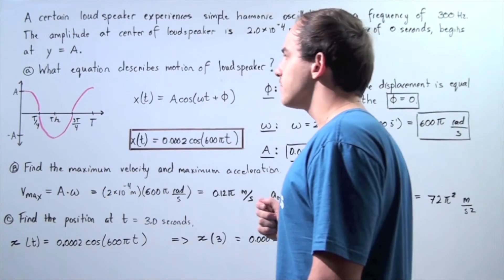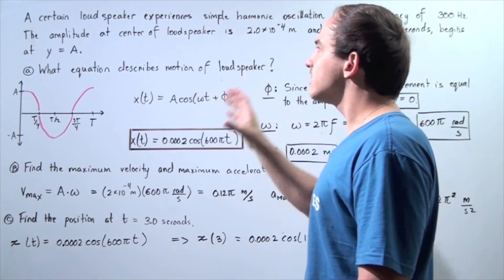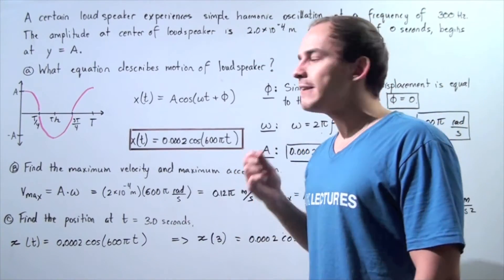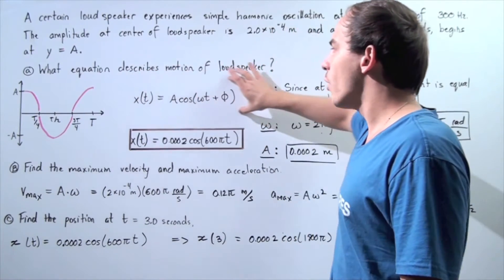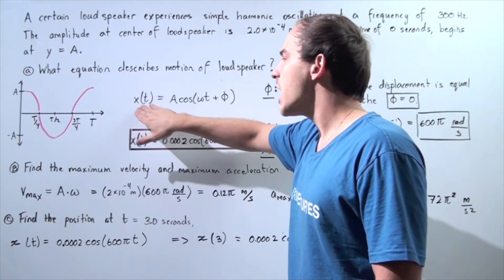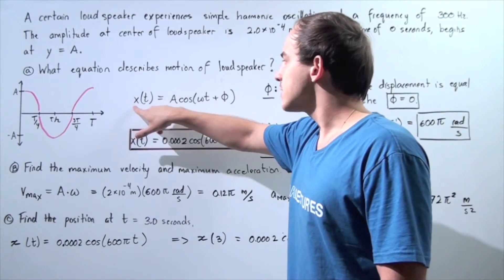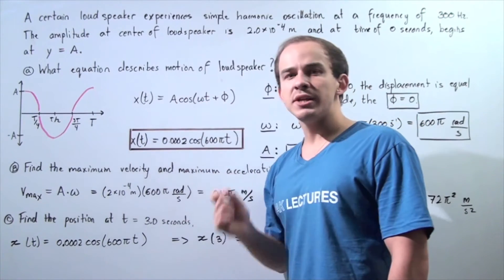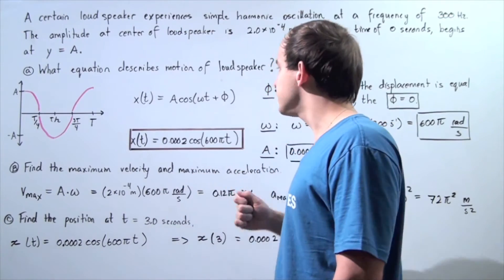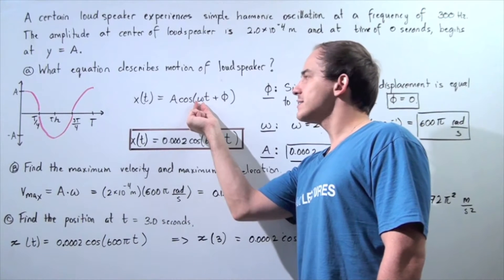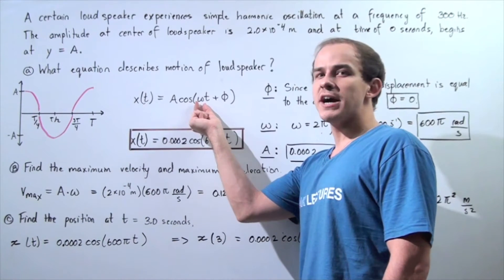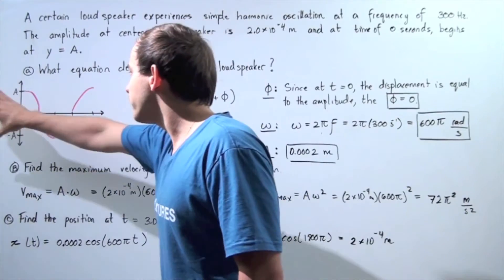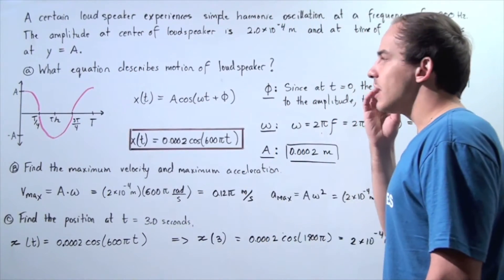Let's begin with part A. Because we are told that the loudspeaker is experiencing simple harmonic motion, we have to use the following general equation to describe the position of the object with respect to time. x of t is equal to A multiplied by cosine of this quantity, where A is simply our amplitude — the maximum displacement — and this is our angular frequency given in radians per second, t is the time, and this is our phase angle. Let's begin by graphing our equation on the x-y plane.